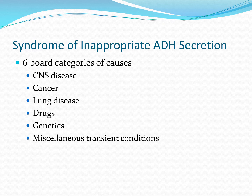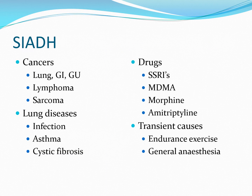Finally, the syndrome of inappropriate ADH secretion has six broad categories of causes: central nervous system disease, certain cancers, certain lung disease, various drugs, genetic abnormalities, and a few miscellaneous transient conditions. Within cancers, it is typically lung cancer — in particular small cell lung cancer — as well as gastrointestinal and genitourinary cancers, lymphoma, and sarcomas. Suppurative lung disease such as infection, pulmonary abscess, and cystic fibrosis can cause SIADH, along with chronic asthma. Certain drugs such as SSRIs, morphine, and amitriptyline can cause SIADH, along with MDMA.